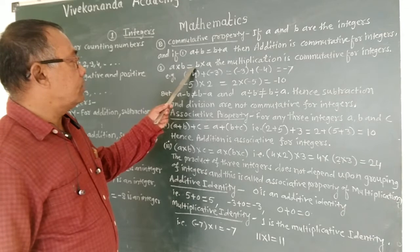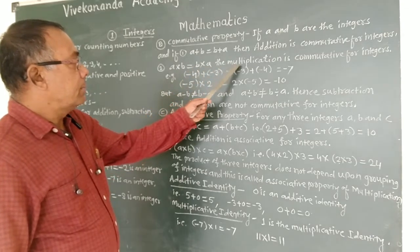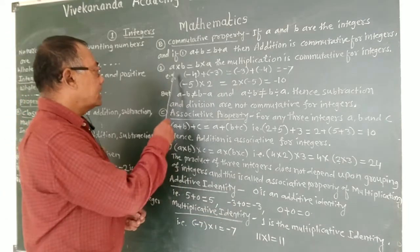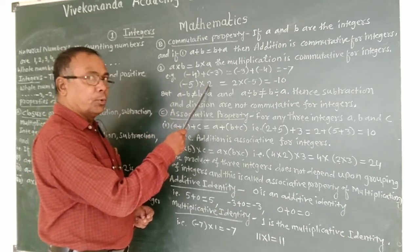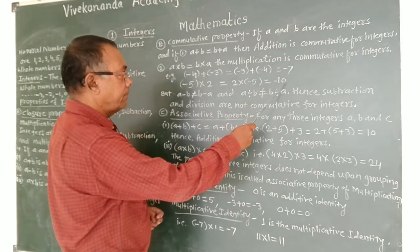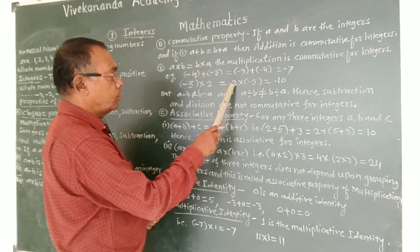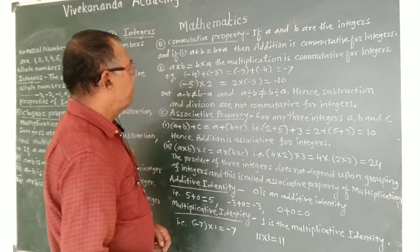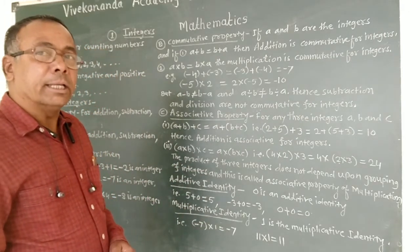For multiplication, if a into b is equal to b into a, then multiplication is commutative for integers. For example, if a is minus 5 and b is 2, then minus 5 into 2 equals minus 10, and 2 into minus 5 is again minus 10. Therefore, multiplication is commutative for integers.